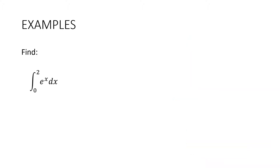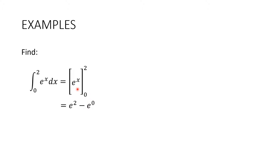Here's an example with e to the x. Integrate e to the x, which gives us e to the x, and move the limits over. Substitute 2 in, subtract, substitute 0 in. The temptation is not to write the substitution of 0 at all, thinking e to the 0 is 0 — but it's not, it's 1. So our answer is e squared minus 1. We always leave our answer as an exact value in simplest form.